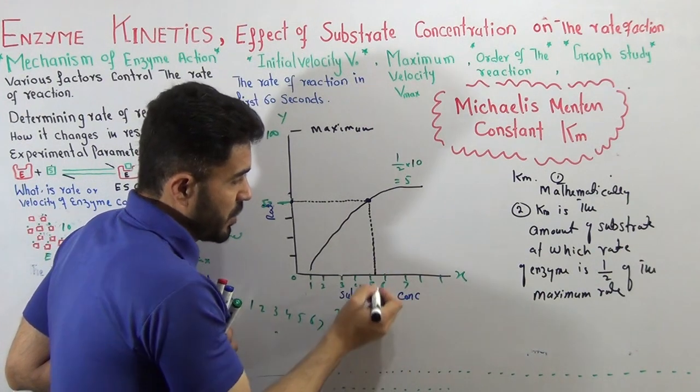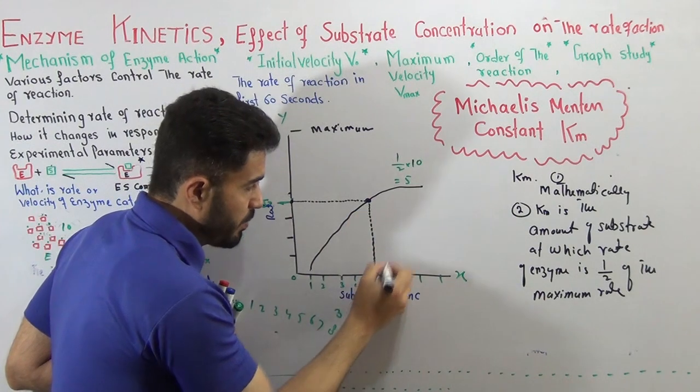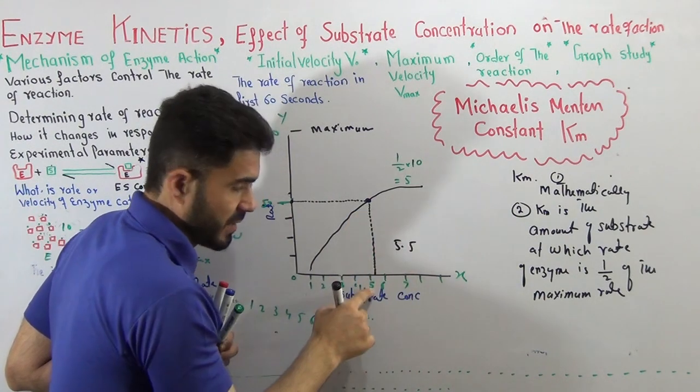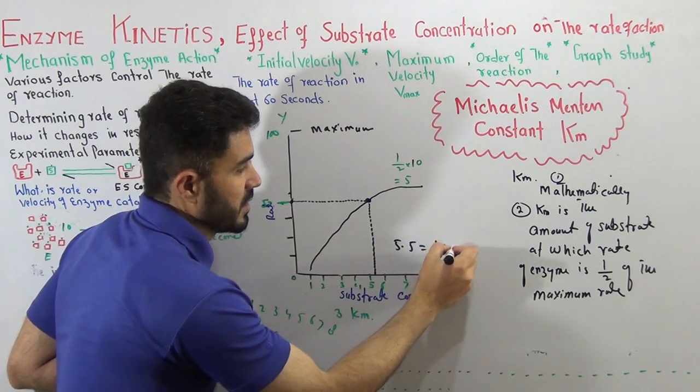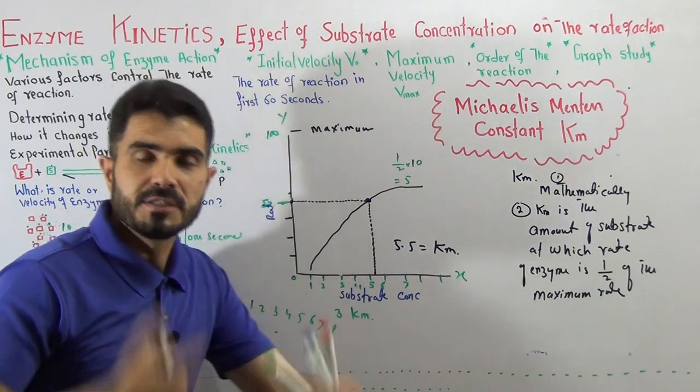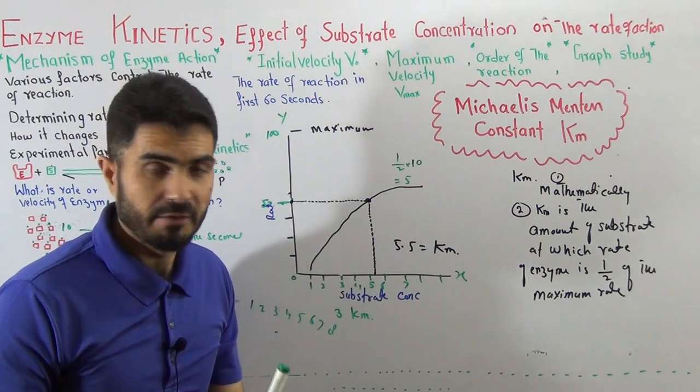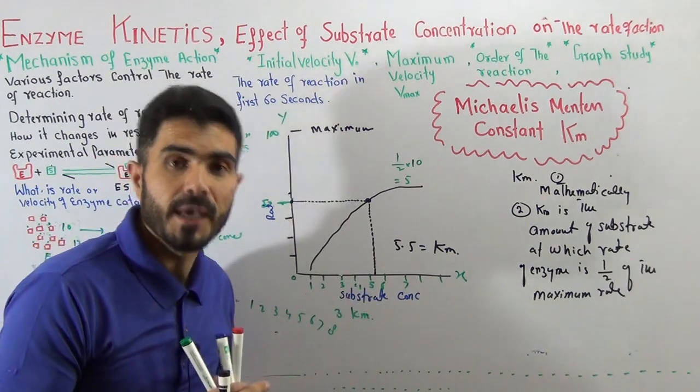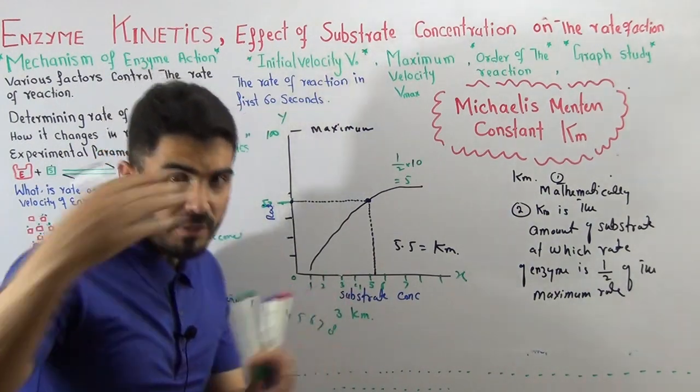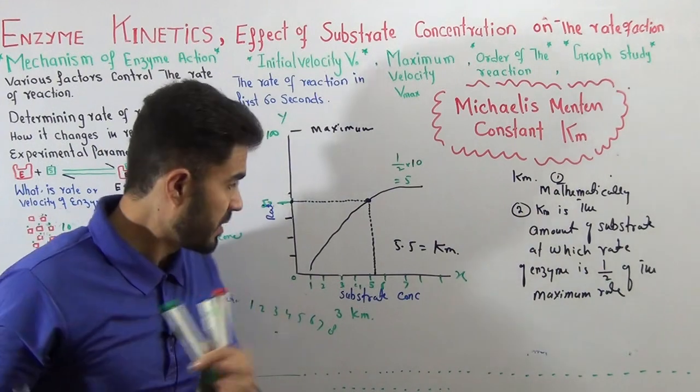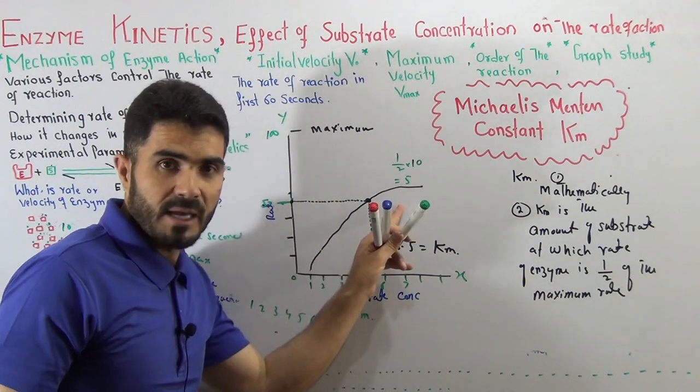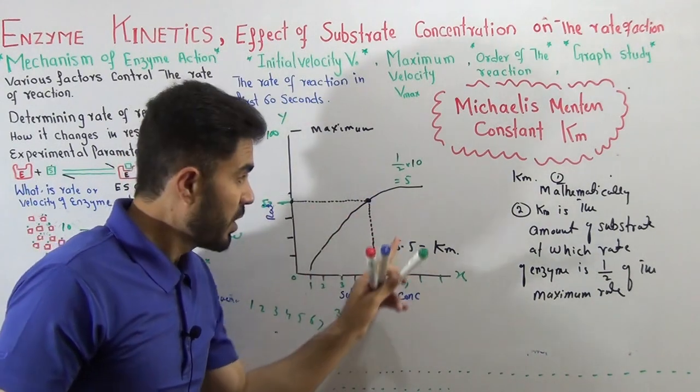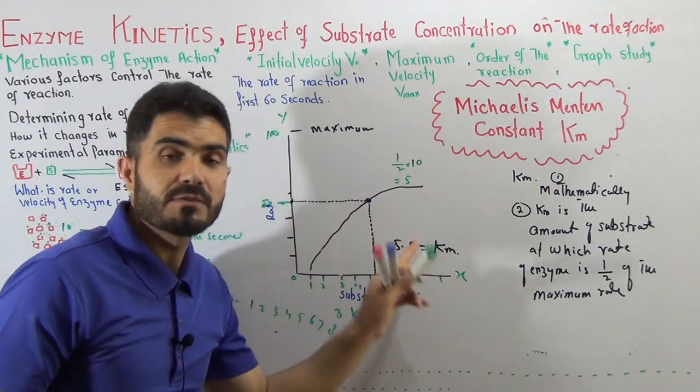So this point represents half of the maximum speed. You just drag it down and it will be between 5 and 6 - 5.5. So this 5.5 is your substrate concentration. This 5.5 is your Km.